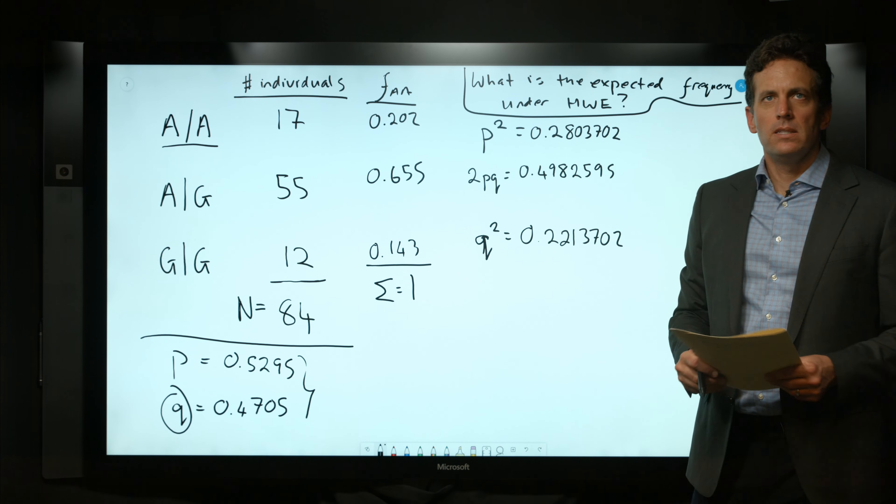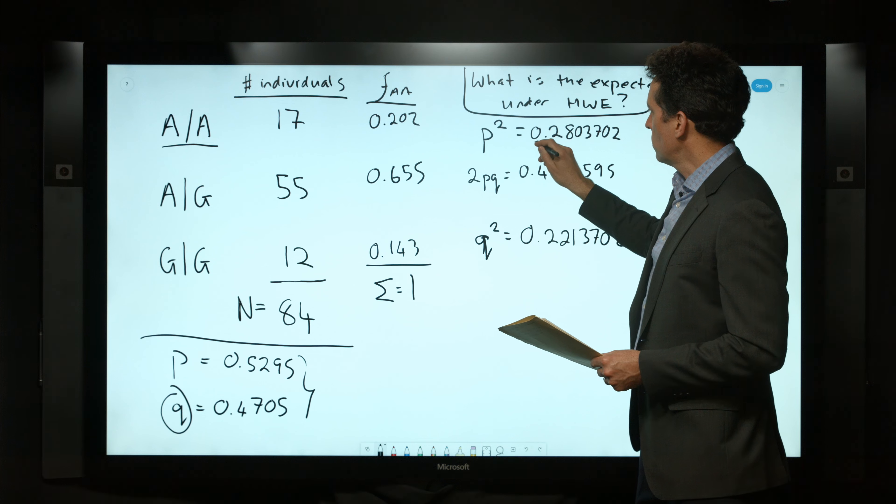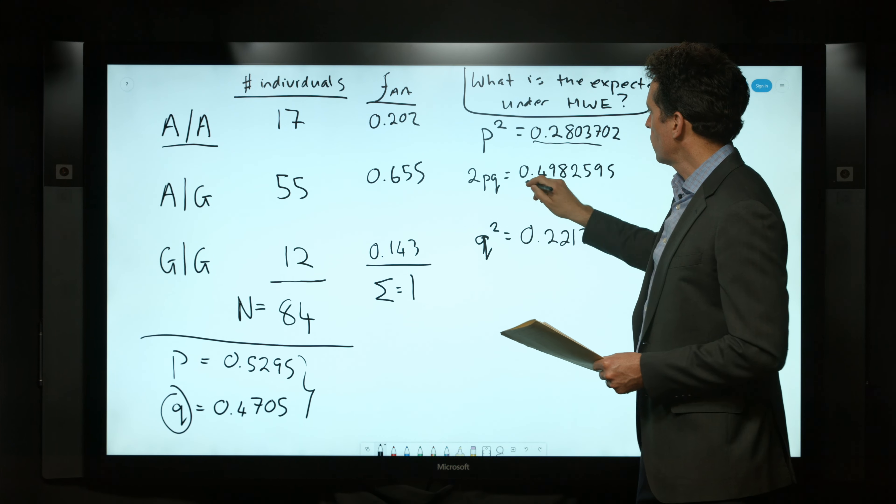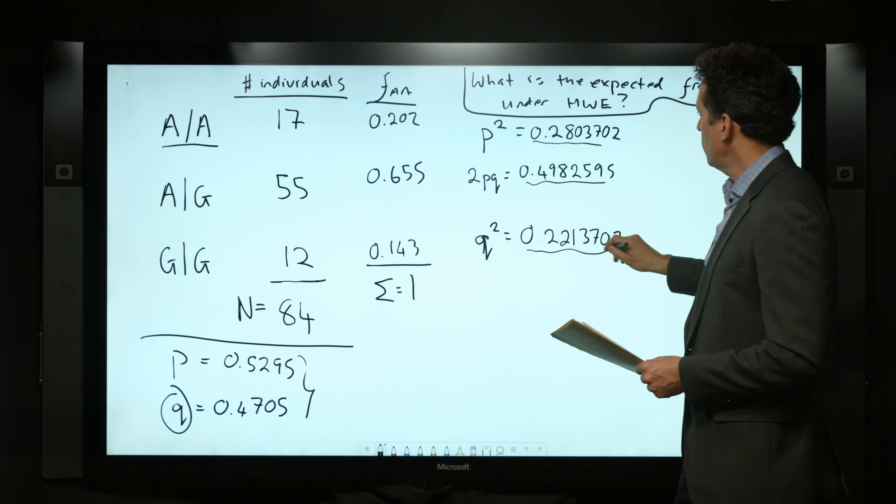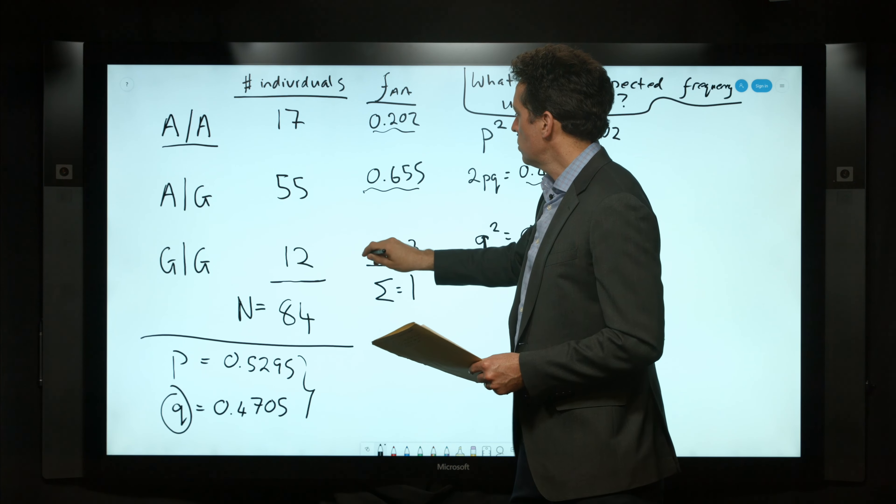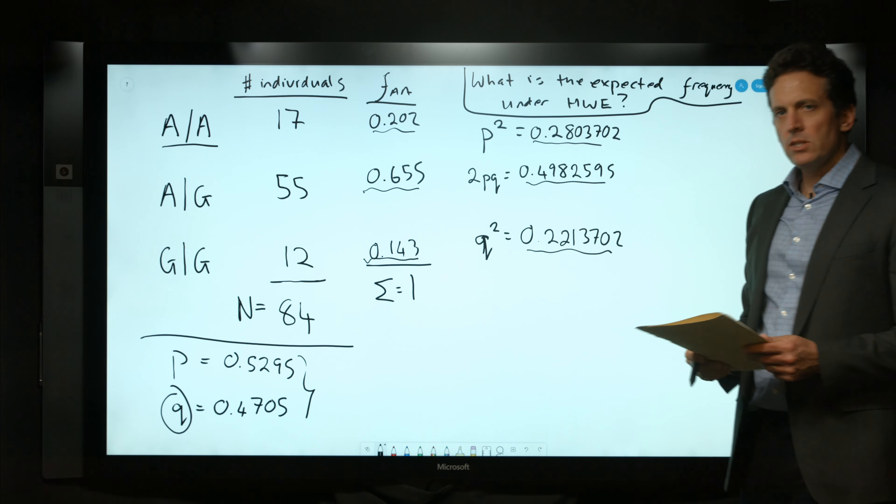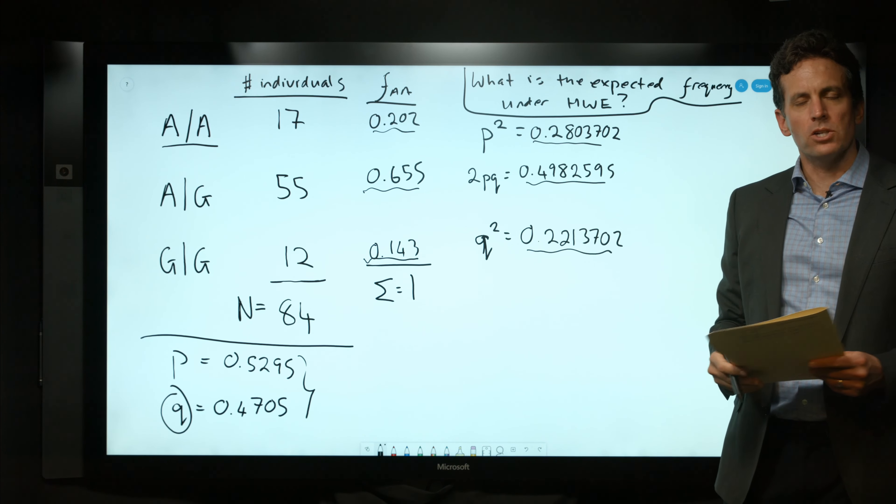We can already see that these expected genotype frequencies, as computed on the basis of Hardy-Weinberg equilibrium, differ somewhat from these observed frequencies shown here. So we can now ask the question: how many individuals would we expect?